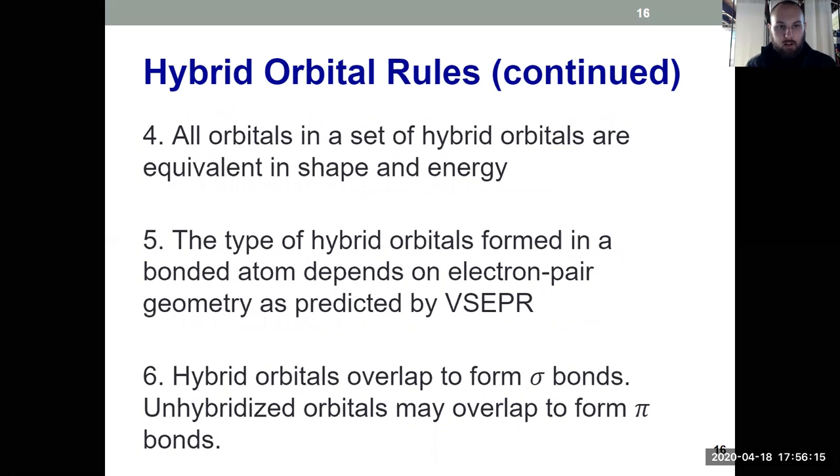Rule 4 says all orbitals in a set of hybrid orbitals are equivalent in shape and energy. Just like unhybridized P orbitals, we considered those in Chapter 6 to be degenerate, they're all of the same energy. Hybrid orbitals that'll be coming out here, same shape, same energy.